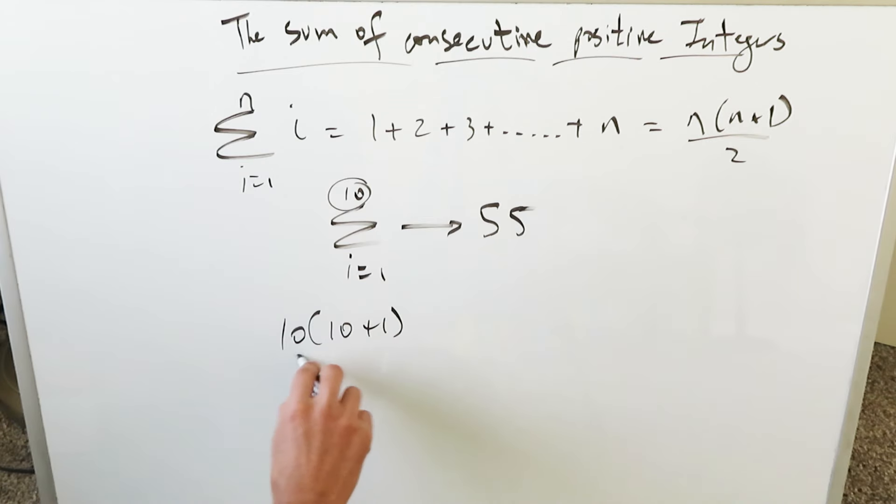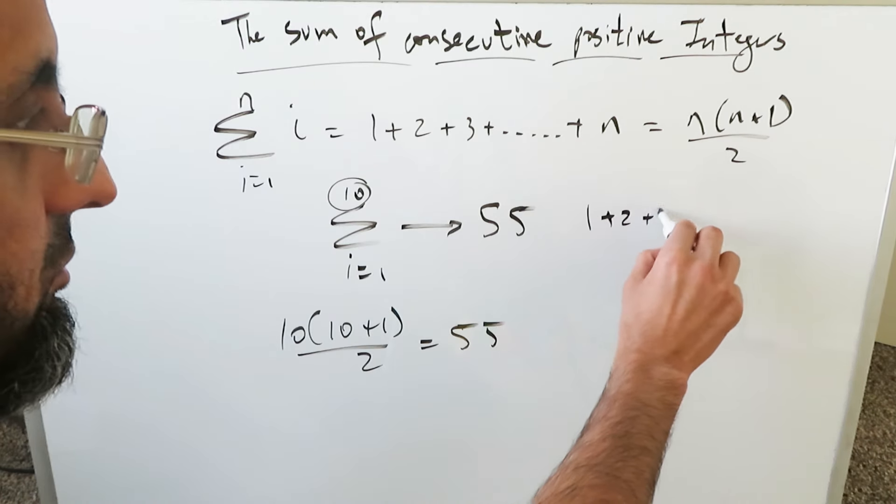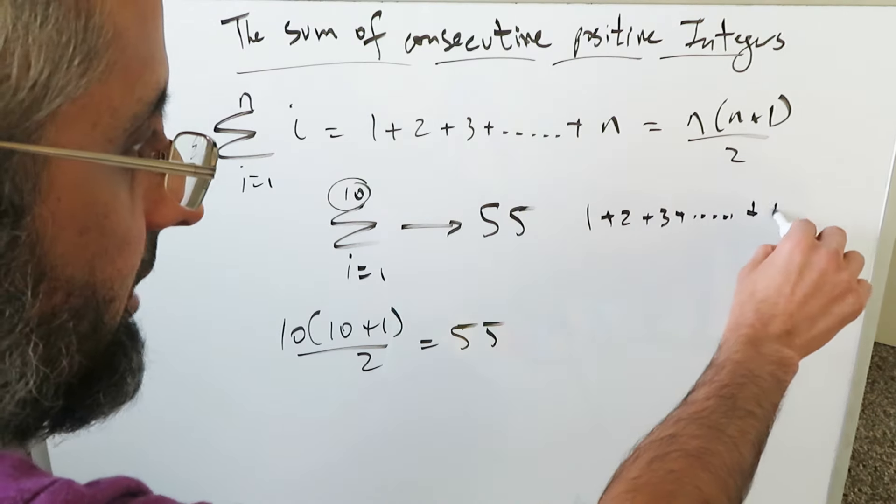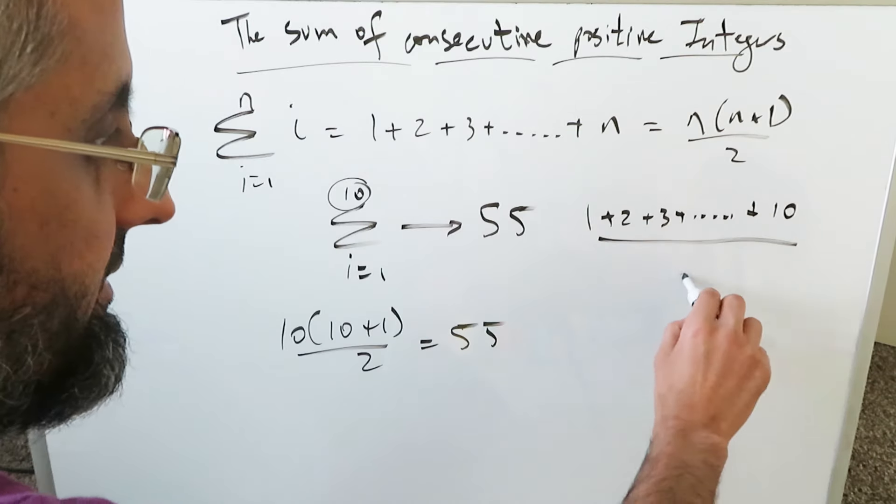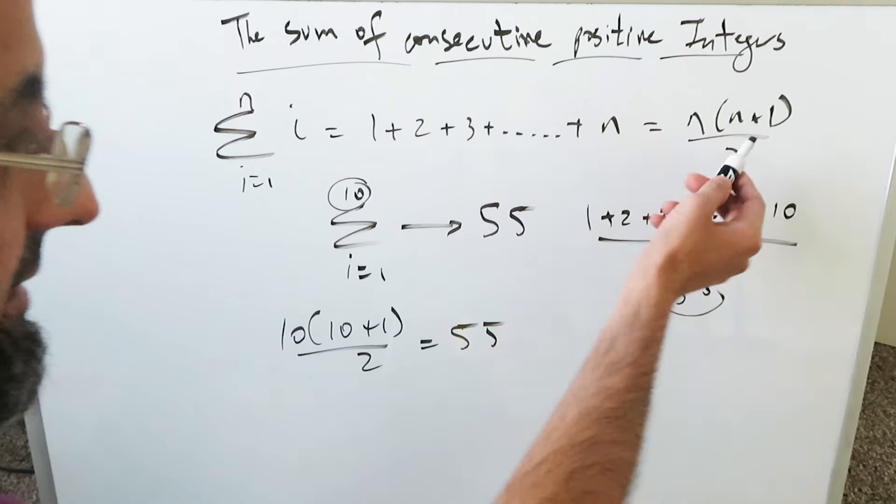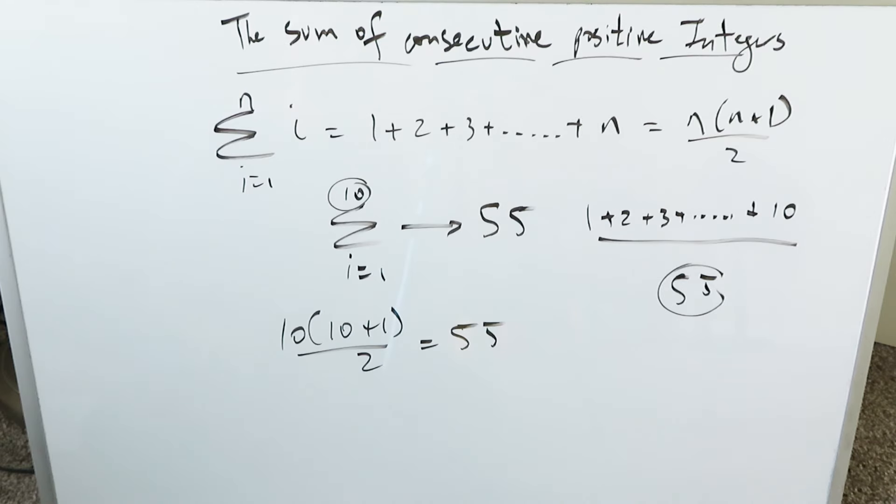10 times 10 plus 1 divided by 2, you will get 55. What are you doing? You're doing basically 1 plus 2 plus 3 plus all the numbers up to and including 10. This gives you 55. This is an excellent formula to remember and to know.